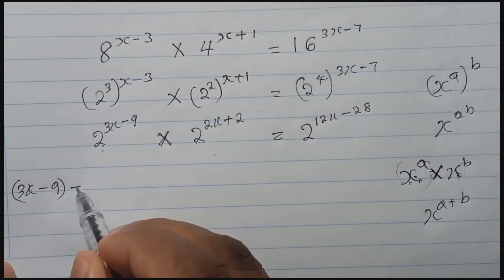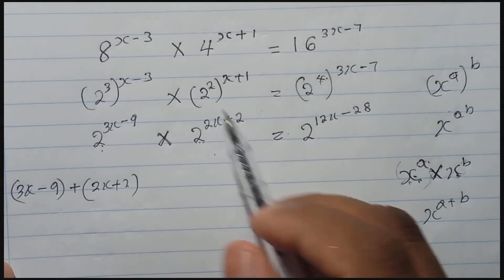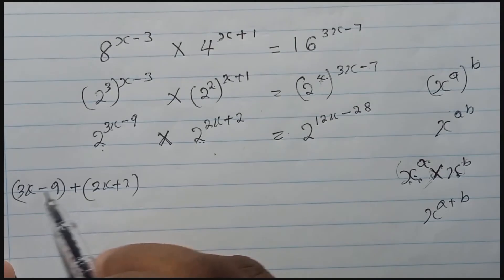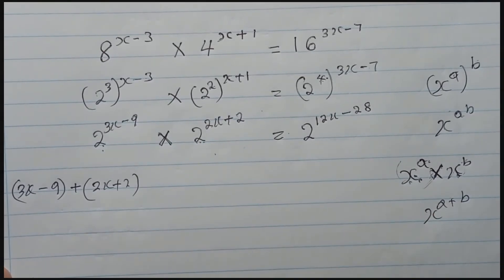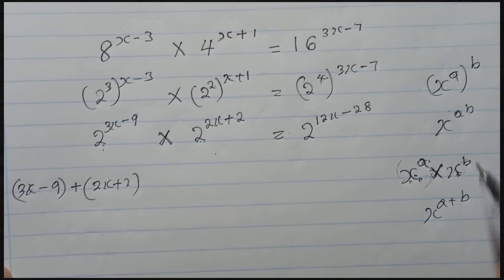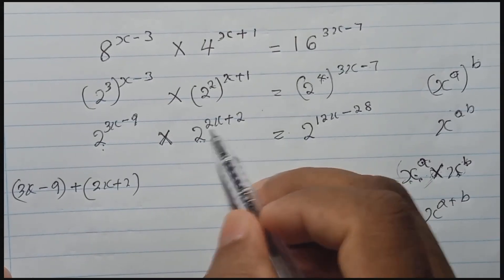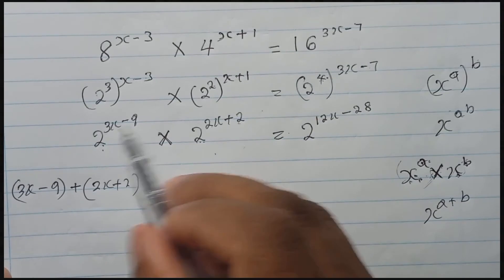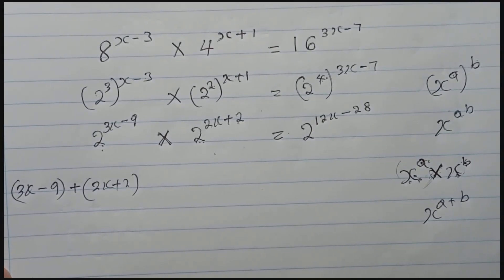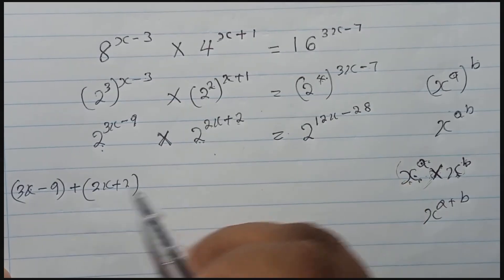So we add the two index expressions: (3x minus 9) plus (2x plus 2). I put brackets here because there's also an important rule: when you have the same base but division, you subtract the indices instead of adding. So if it were division, you'd put a minus and bracket the second index. But here we have multiplication, so we add. Keep that in mind for future questions.